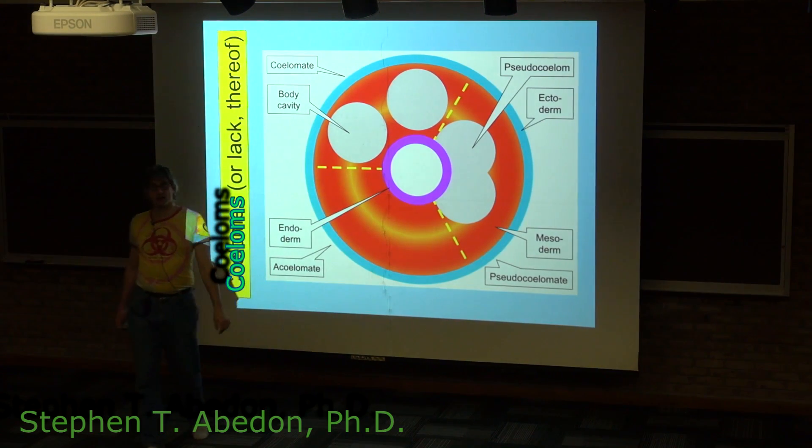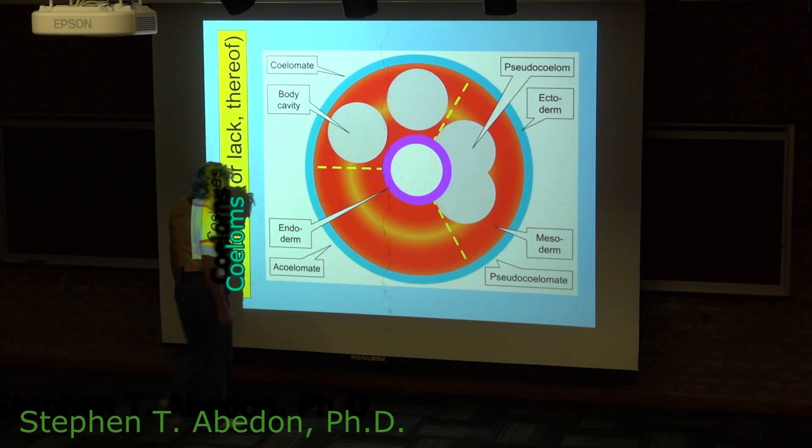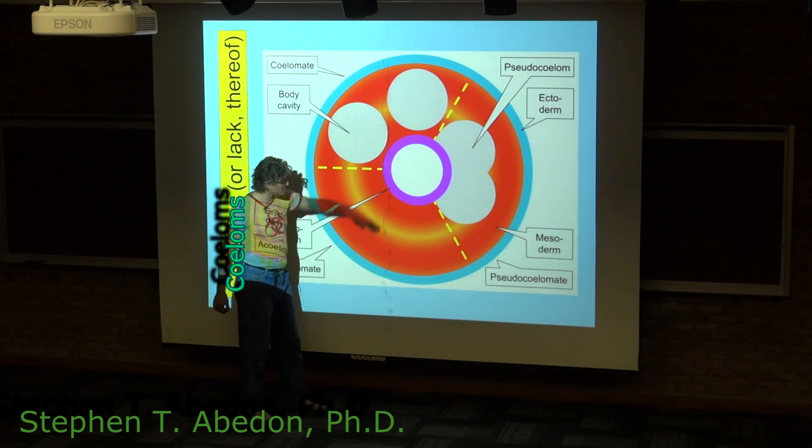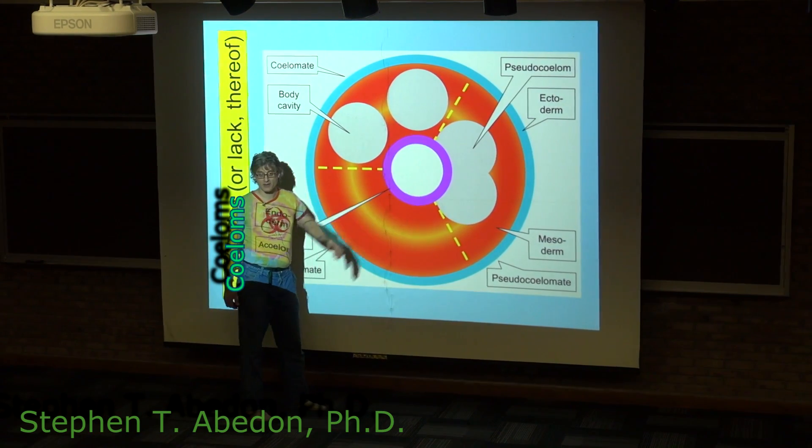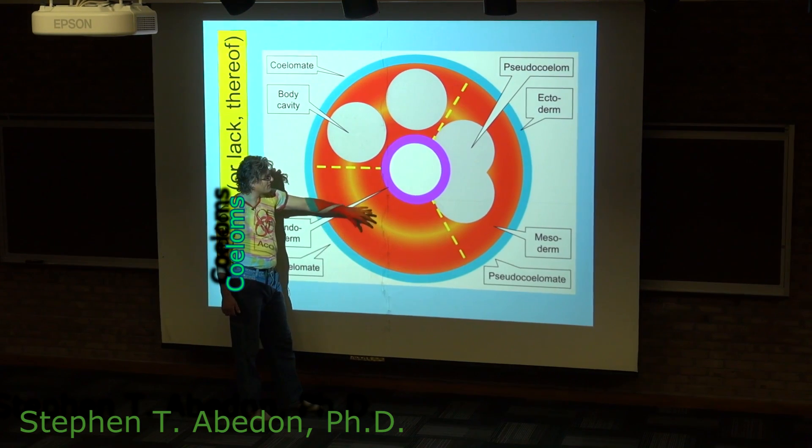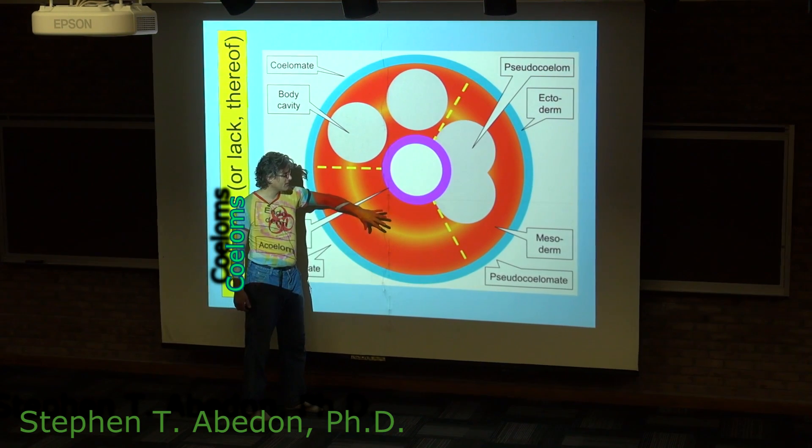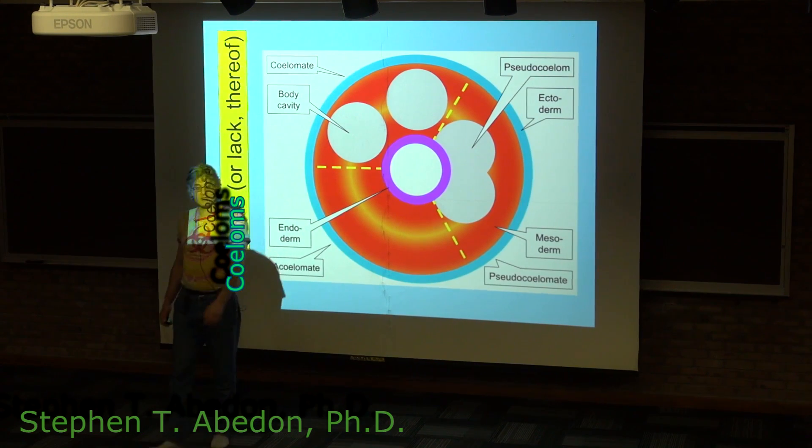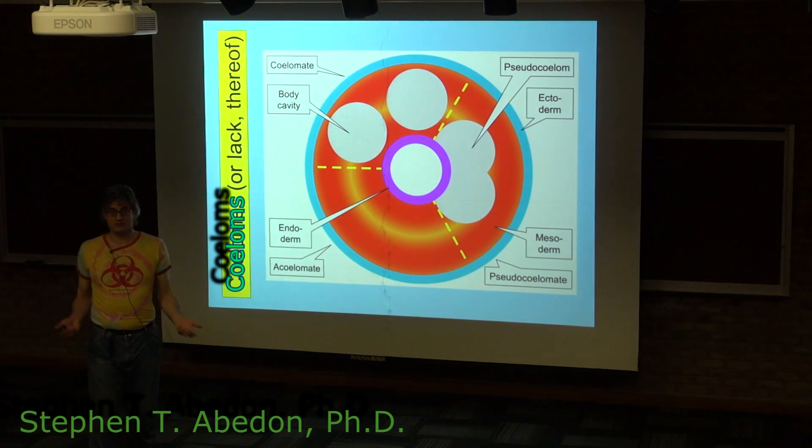This is what you see in the flatworms. Basically what they have is an outside, a lining to their gut or gastrovascular cavity, and then between the two they have a solid layer of mesodermal tissue. You can think of that as muscle.